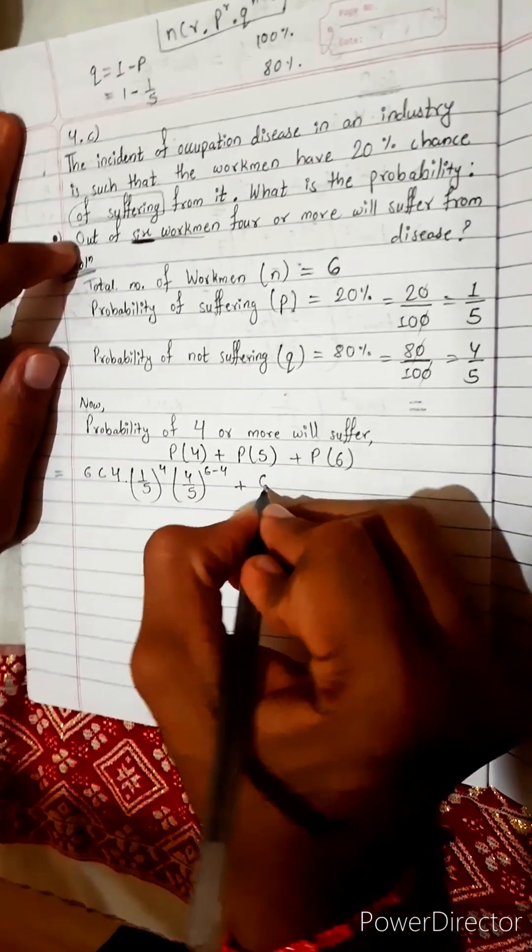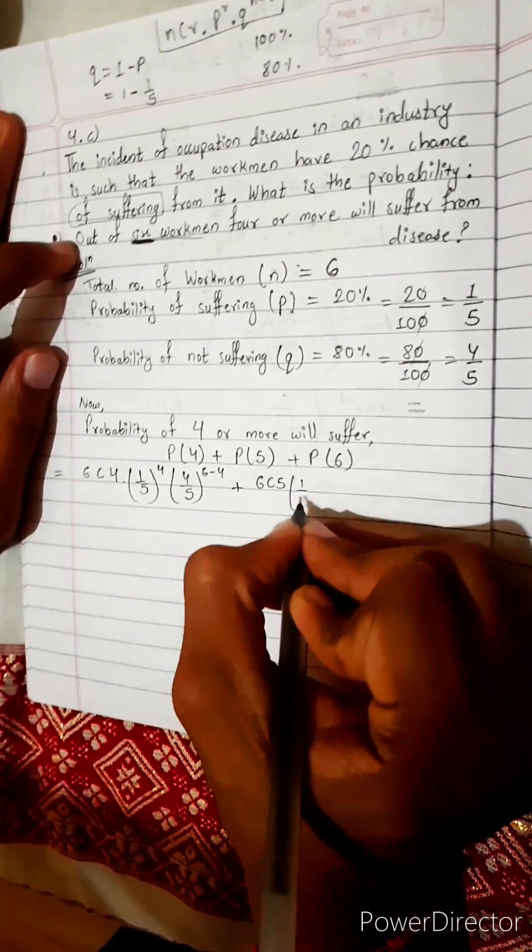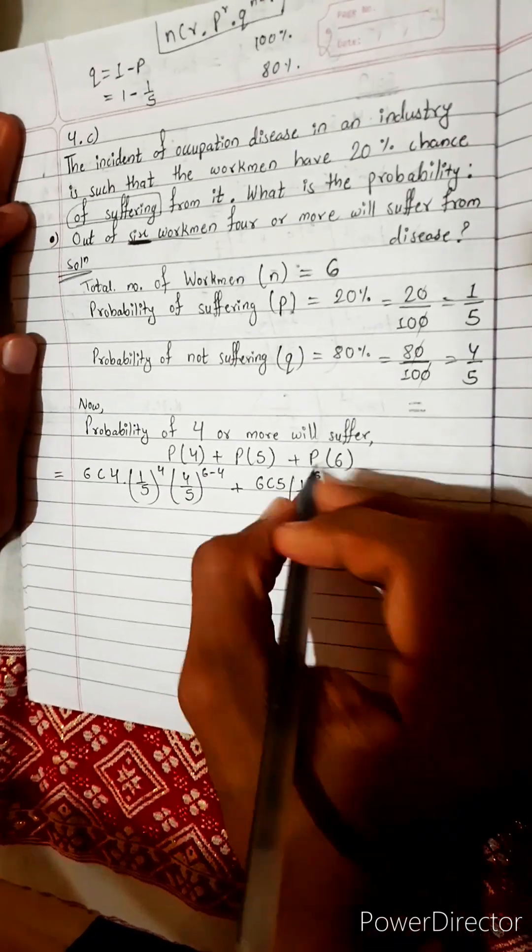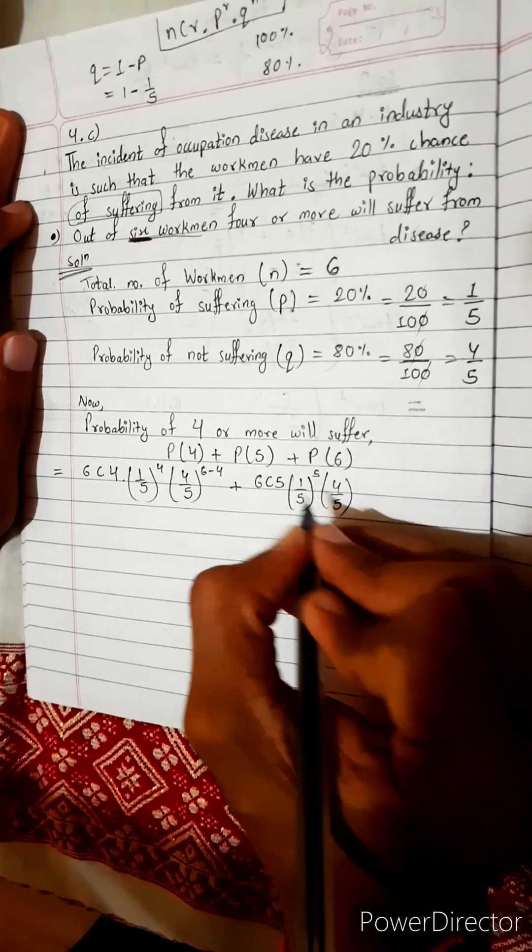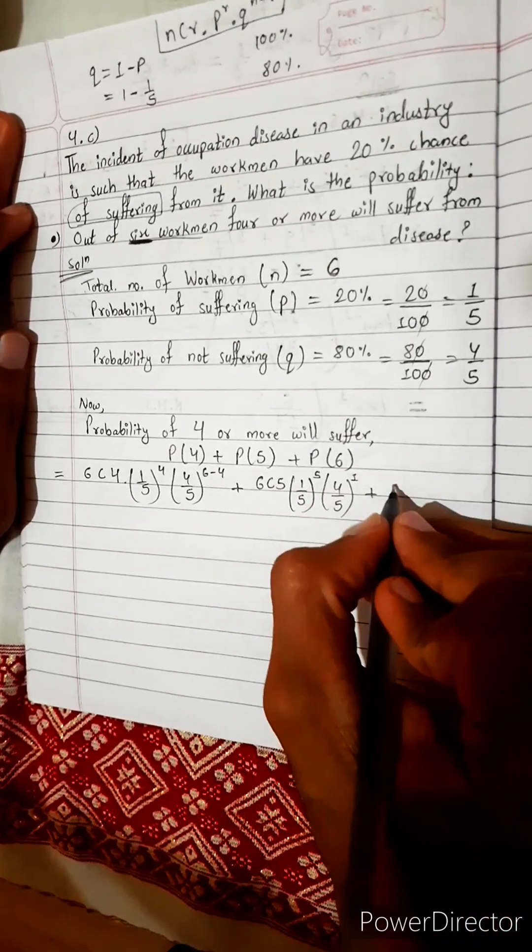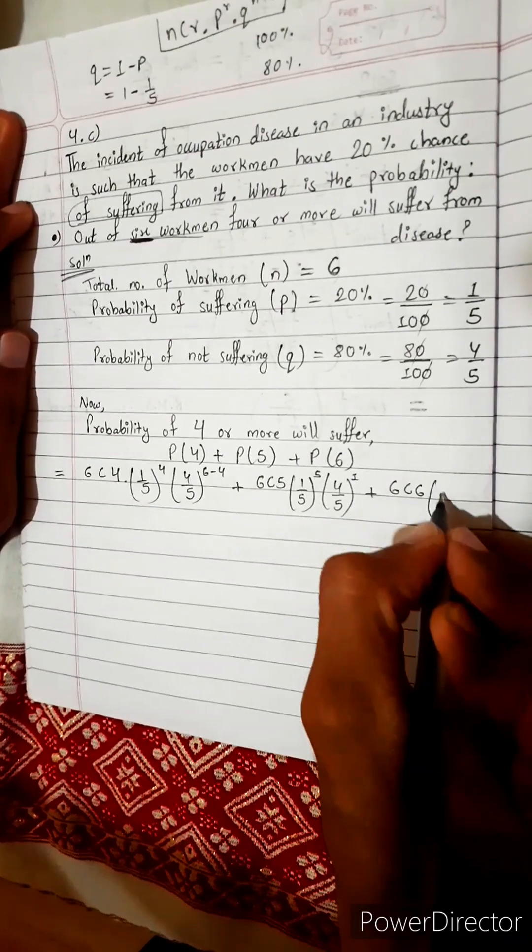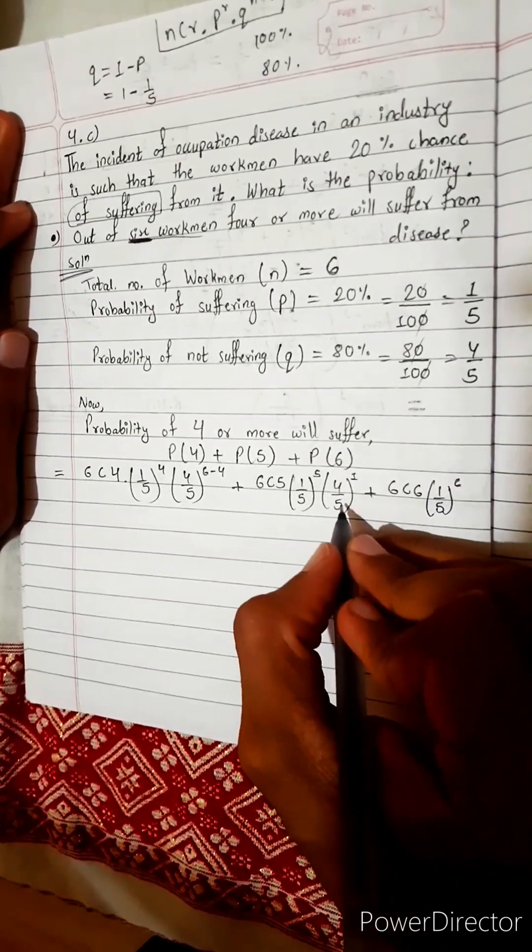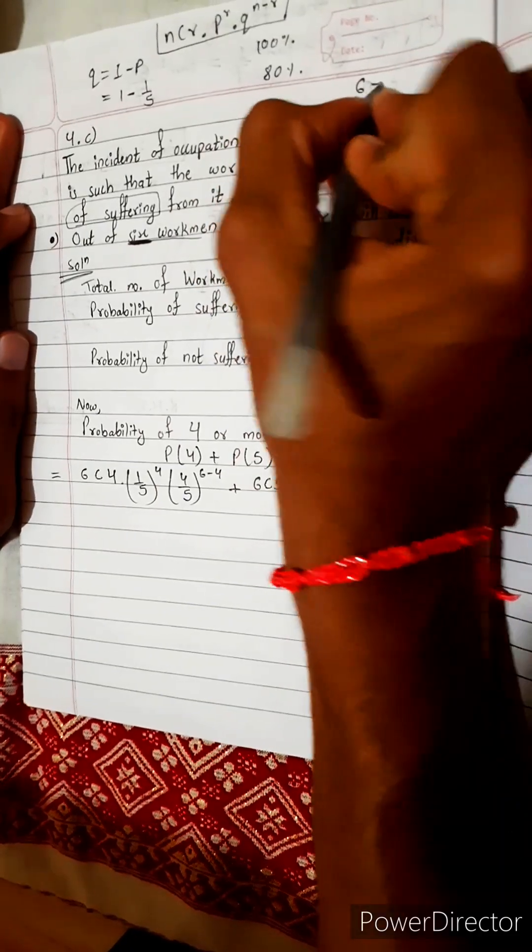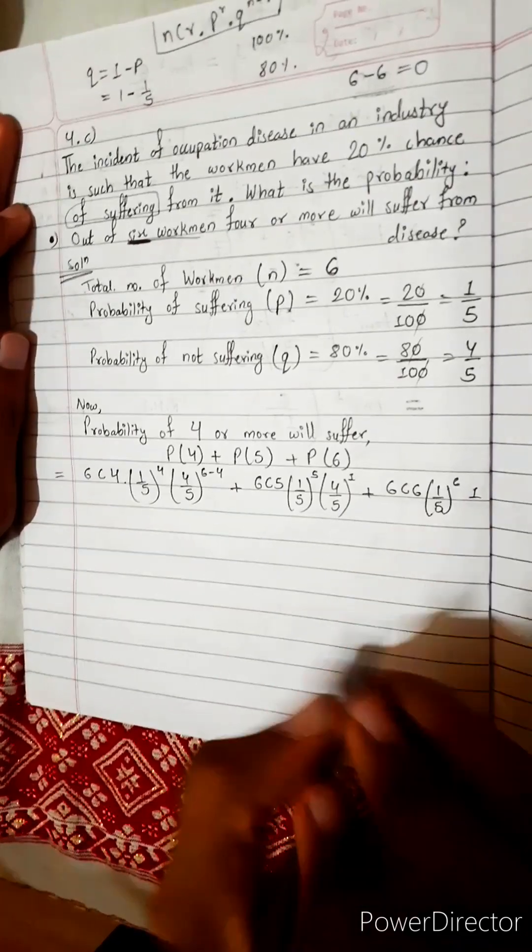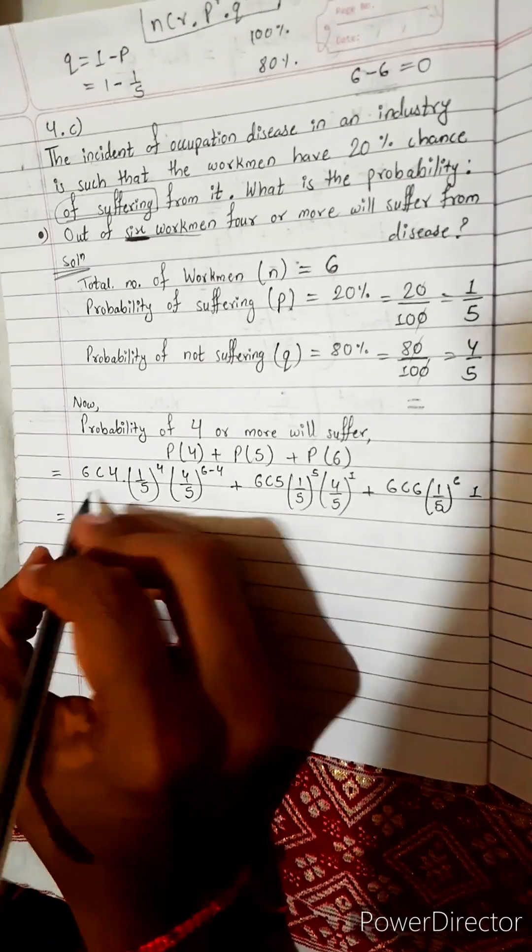Plus now for P(5), it will be 6C5 into 1 by 5 power 5, this is r, and 4 by 5 power 6 minus 5 which is 1. Now for P(6), it will be 6C6, 1 by 5 power 6, and 4 by 5 power 6 minus 6. 6 minus 6 means 0, and anything power 0 is 1, so directly 1, no need to solve.